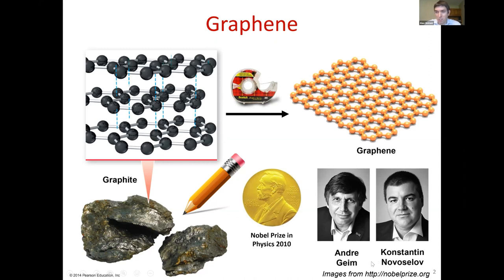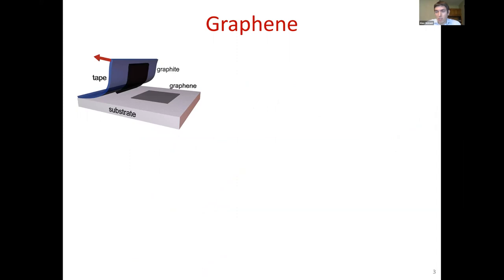Andre Geim and Konstantin Novoselov received the Nobel Prize in Physics for this in 2010. You might ask: is it really that simple — just take a crystal, put a piece of scotch tape, peel it off, and get graphene? The answer is yes. This schematic shows exactly how crystals of graphene are isolated, and it's really as simple as it sounds.